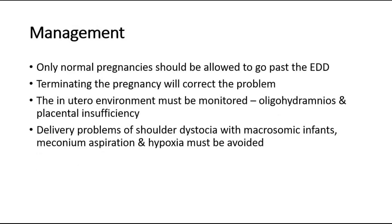For management, the principal concepts are as follows: only normal pregnancies can be allowed to go past the estimated date of delivery. Terminating the pregnancy will correct the problem, and we must monitor the uterine environment. Delivery problems of shoulder dystocia with macrosomic infants, meconium aspiration, and hypoxia must be avoided.